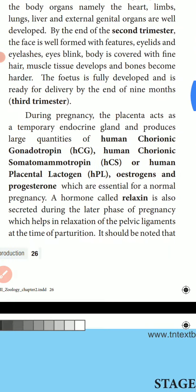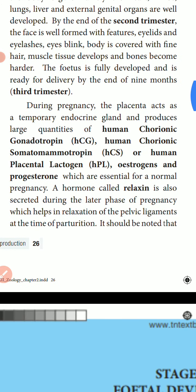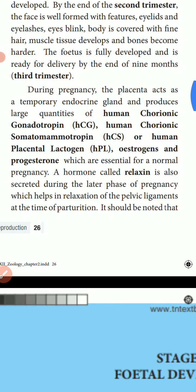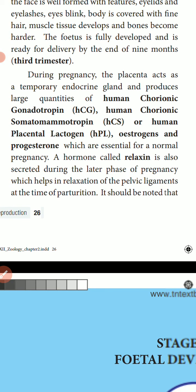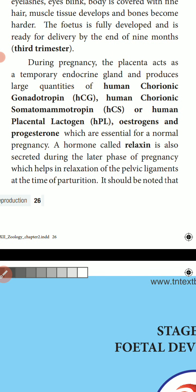During pregnancy, the placenta acts as temporary endocrine glands and produces large quantities of HCG (human chorionic gonadotropin), HCS or HPL (human chorionic somatotropin / human placental lactogen), as well as estrogen and progesterone, which are essential for normal pregnancy.